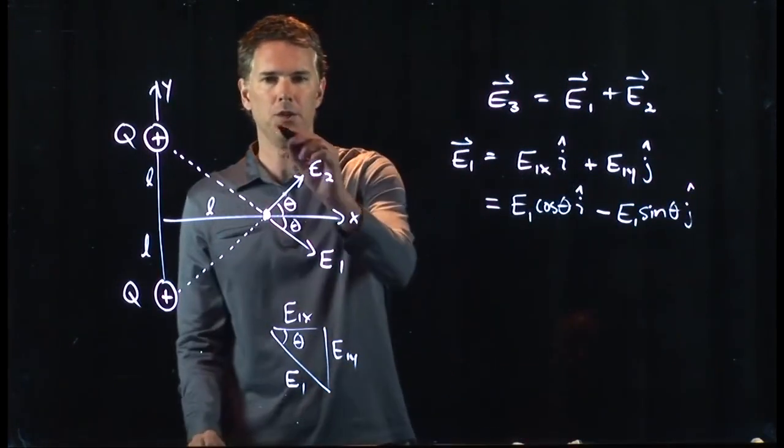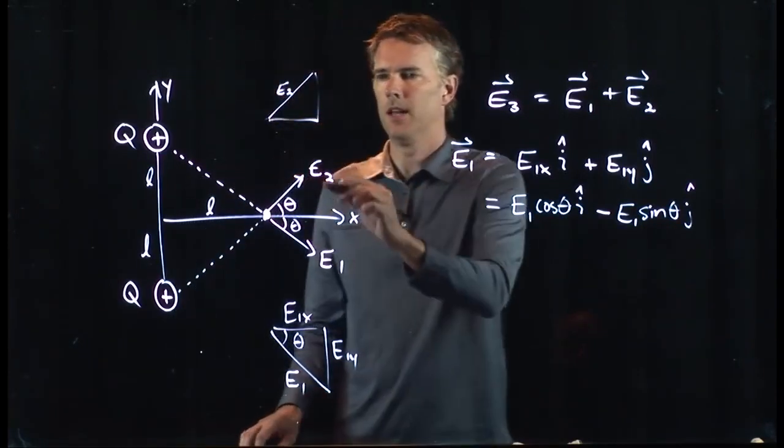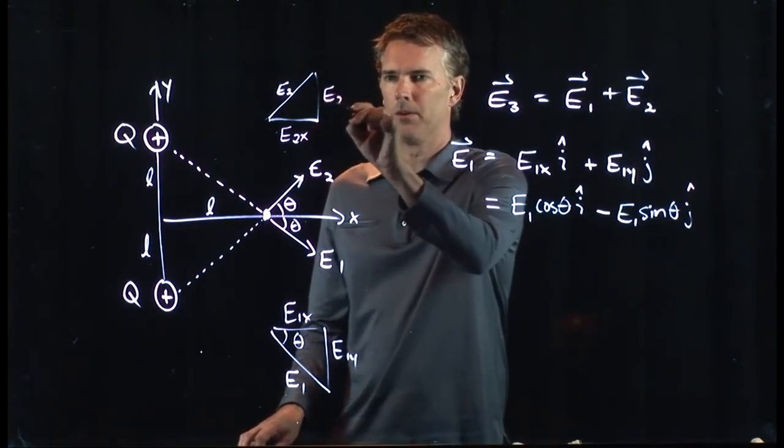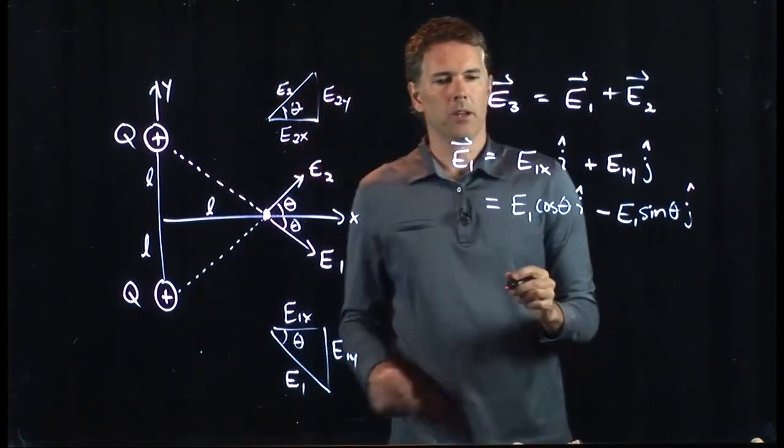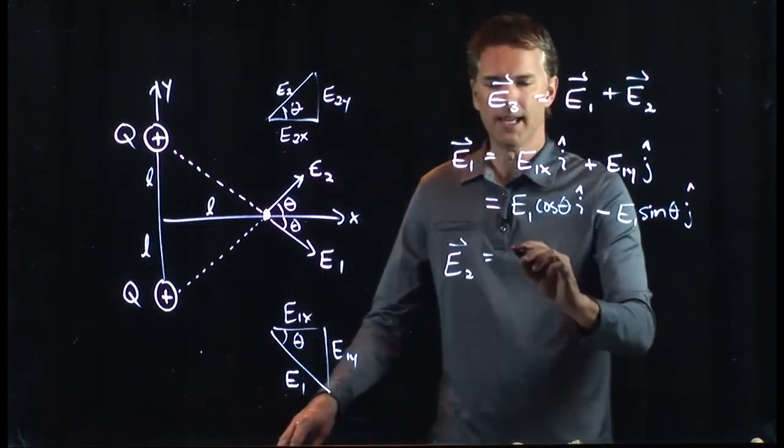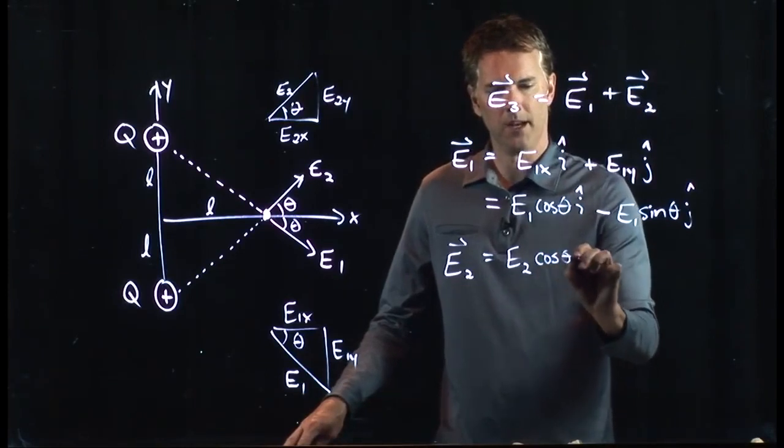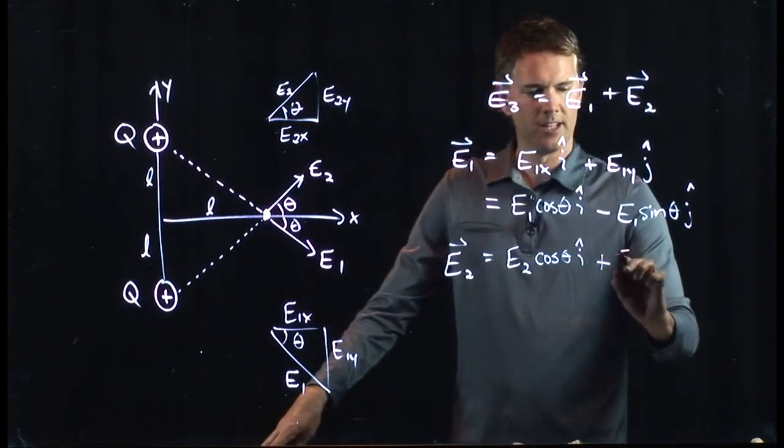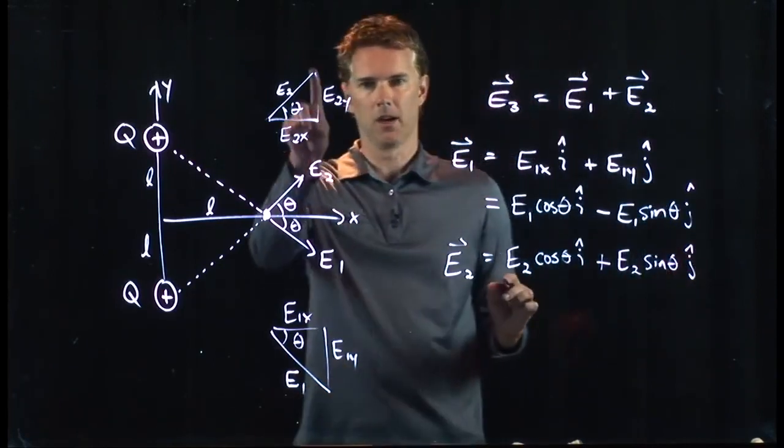And now we can do the same thing for E2. E2 looks like this. It has an x component to it. It has a y component to it. This is angle theta. And so we can write down E2 very simply. It is going to be E2 cosine of theta, i-hat. It's going to the right. Plus E2 sine theta, j-hat. It's going up.